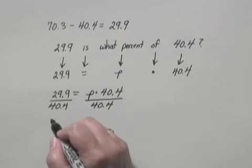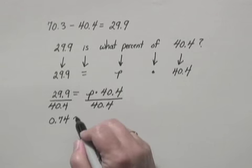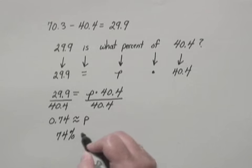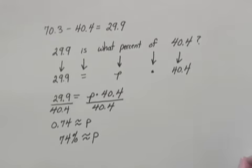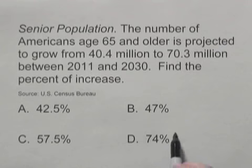Doing this division we get approximately 0.74. So that is approximately equal to P. And in percent notation we would say 74% is approximately equal to P. Now looking back at our choices, we see that choice D is 74%. So our answer is D.